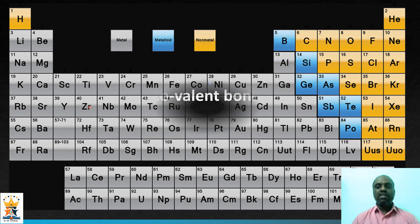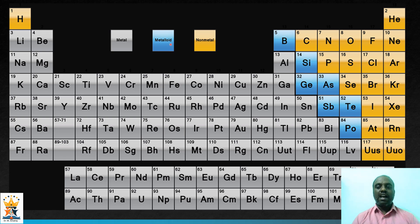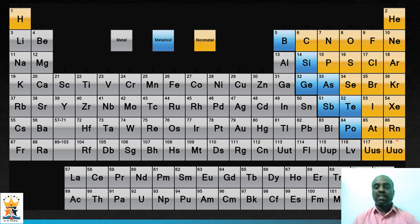If you look at the periodic table, this particular staircase separates metals from non-metals. The elements marked as grey are metals and the elements marked as blue are metalloids — elements which have both metallic as well as non-metallic properties. The elements marked as yellow are considered as non-metals. The 18th group is nothing but the inert gases that do not take part in reactions.